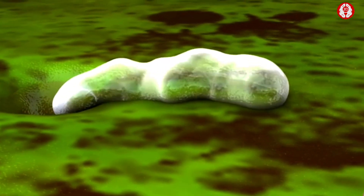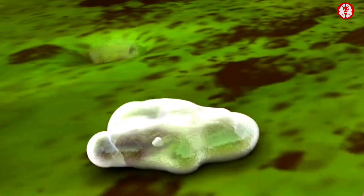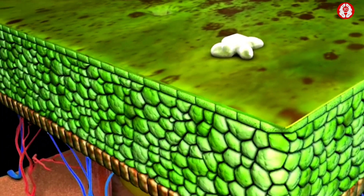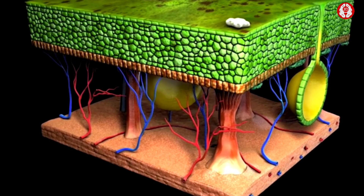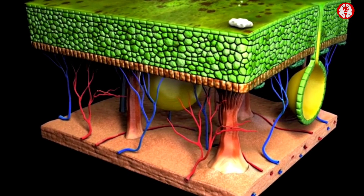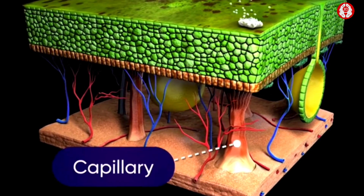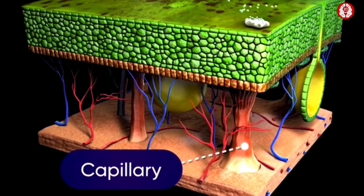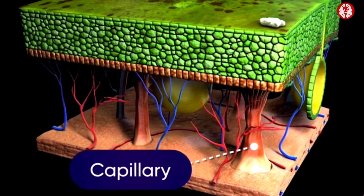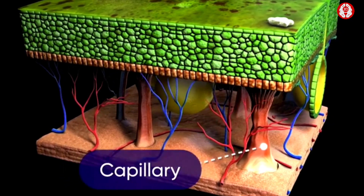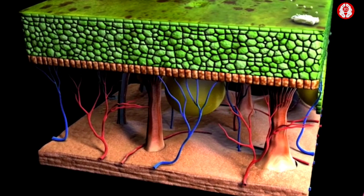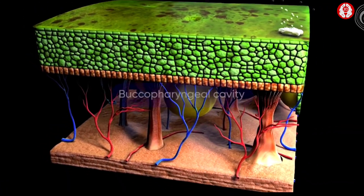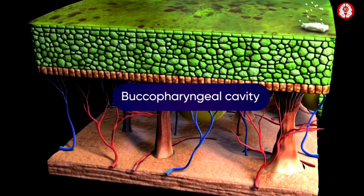The mucus secreted by these glands keeps the skin moist by holding a thin film of water between itself and the skin surface. This thin film of water helps in gaseous exchange between the blood in the capillaries located in the dermis region lying next to the epidermis and the outside environment.